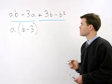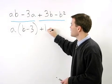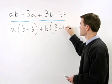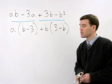For the last two terms, we can factor out a positive B, which leaves us with 3 minus B inside the parentheses.